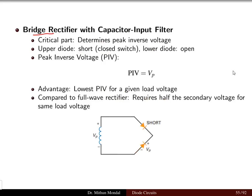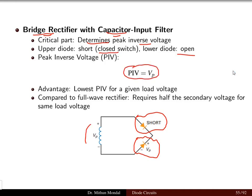On the other hand, if we have the bridge rectifier configuration for the full-wave rectifier with capacitor input filter, again the critical part is to determine the peak inverse voltage. Since it is a full-wave bridge rectifier, two diodes operate at the same time — the conducting diode acts as a closed switch and the other acts as open. The peak inverse voltage coming from the secondary of the transformer is VP, which it has to withstand. The bridge rectifier has the lowest peak inverse voltage for a given load voltage compared to the other configurations.